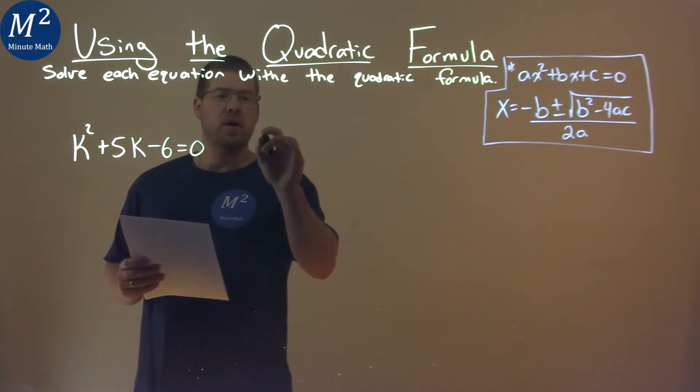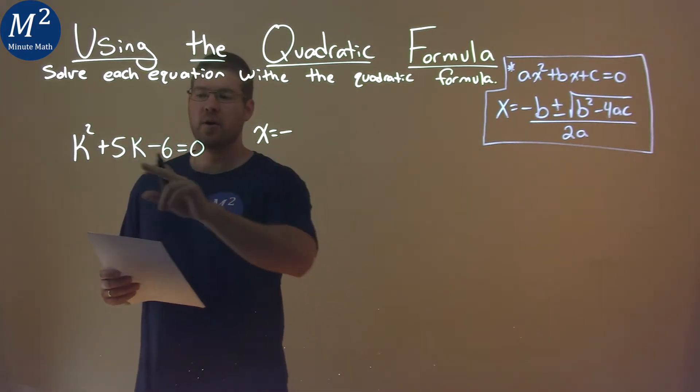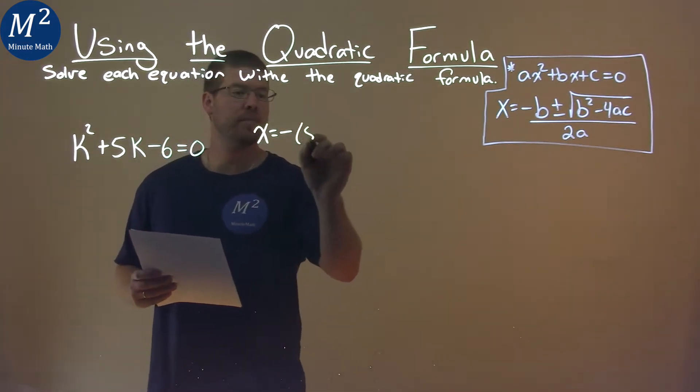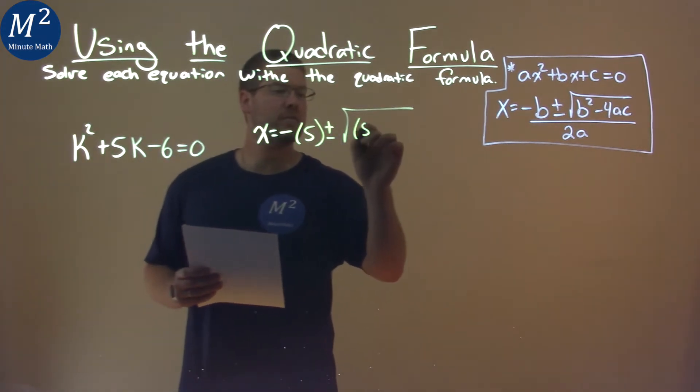So we have x equals... now plugging in negative b - so negative, and our b value is positive 5 here - plus or minus the square root of positive 5 squared